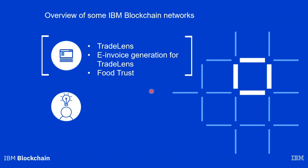Now we will look at some flagship networks built on Hyperledger Fabric. Three such networks are: the TradeLens network for global trade participants, the Food Trust network, and an e-invoice generation network — which is a value-added service on top of TradeLens. We will see the details of all three, starting with TradeLens.